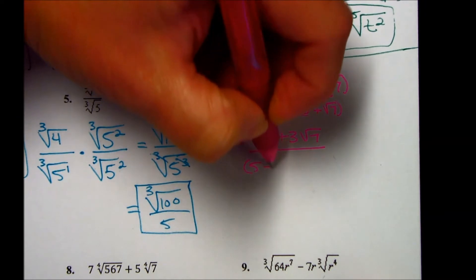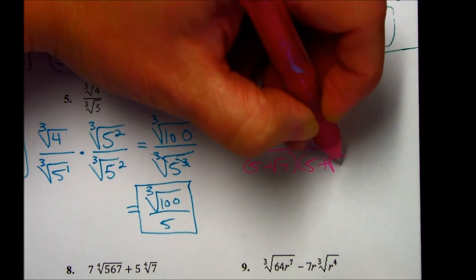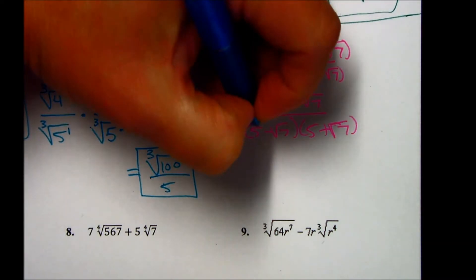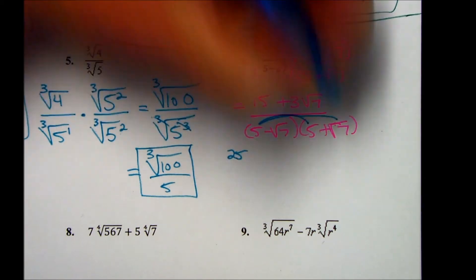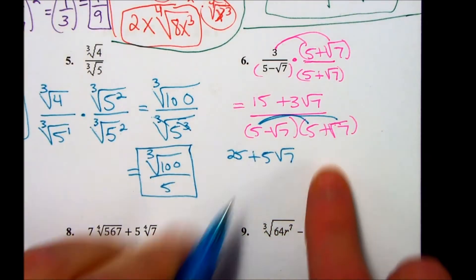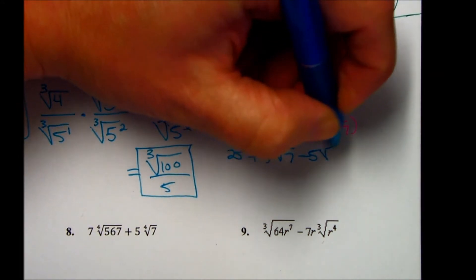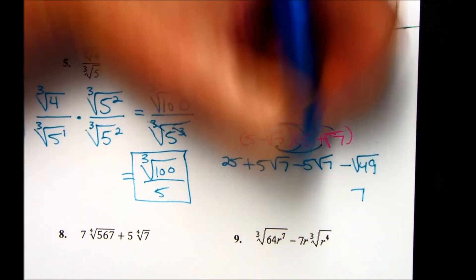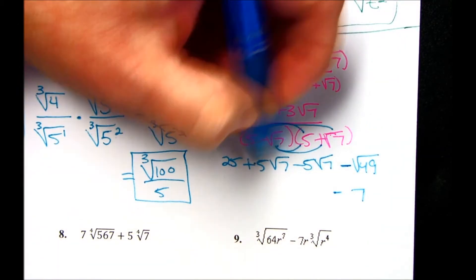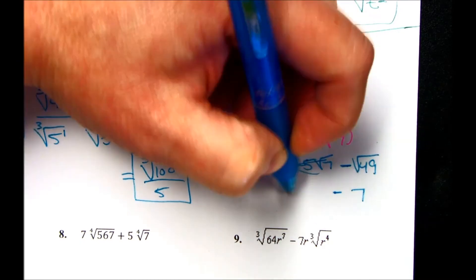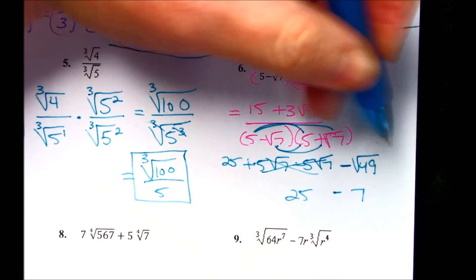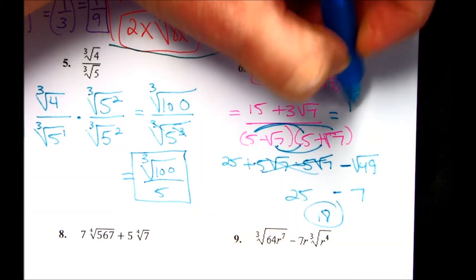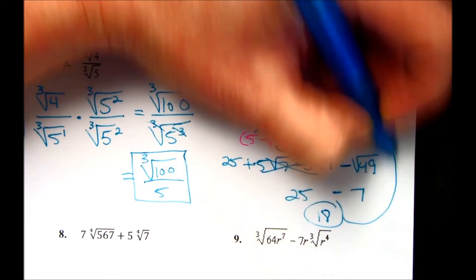For the denominator, you have to FOIL it out. When we do, we can eliminate the radicals: 5 times 5 gives 25; 5 times the square root of 7 is positive 5 square root of 7; negative square root of 7 times 5 is negative 5 square root of 7; and negative square root of 7 times positive square root of 7 is negative square root of 49, which reduces to negative 7. The middle terms cancel, and 25 minus 7 gives a denominator of 18. So the simplified answer is (15 + 3√7) / 18.